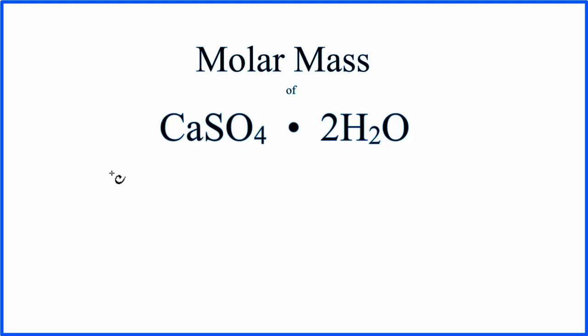When we look calcium up on the periodic table, it has a mass of 40.08 grams per mole. We add that to sulfur, which is 32.07 grams per mole, and then oxygen is 16.00 grams per mole, but we have four oxygens,